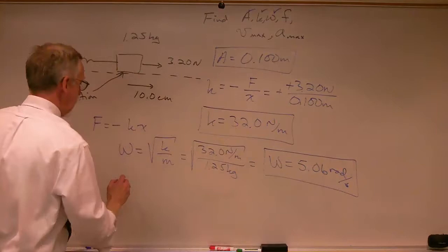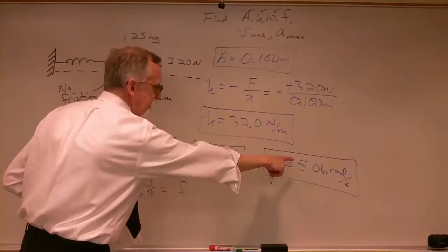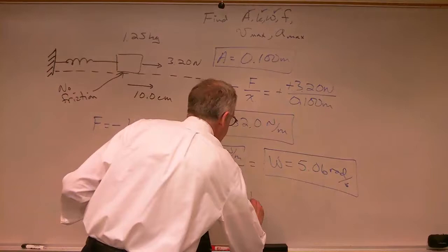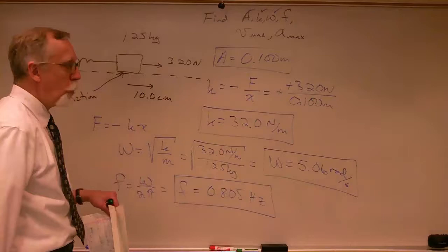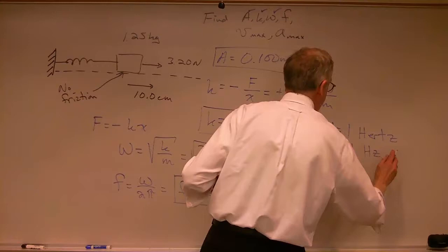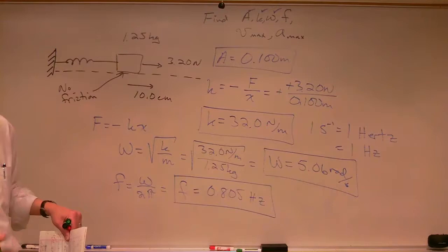What is f? f is omega over two pi. We take 5.06 and divide by two pi, and we get 0.805 inverse seconds. An inverse second we can write as the unit hertz — 1 Hz, written as capital H lowercase z. A hertz is a cycle per second; it tells us the number of cycles per second.